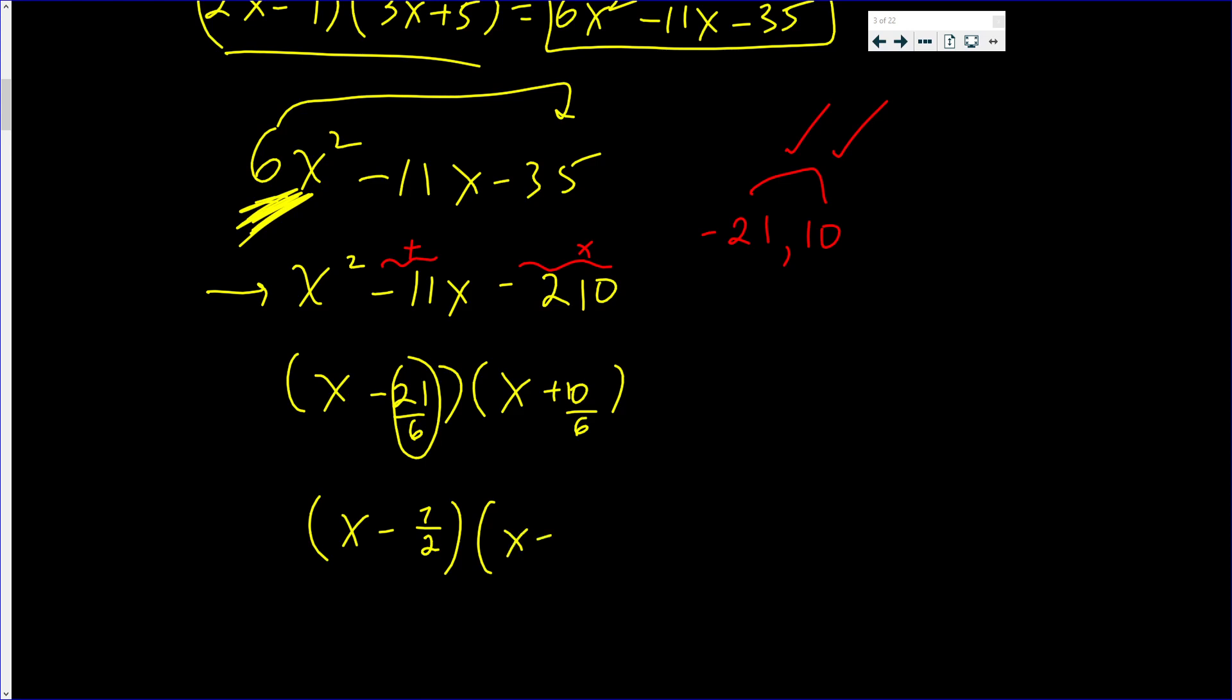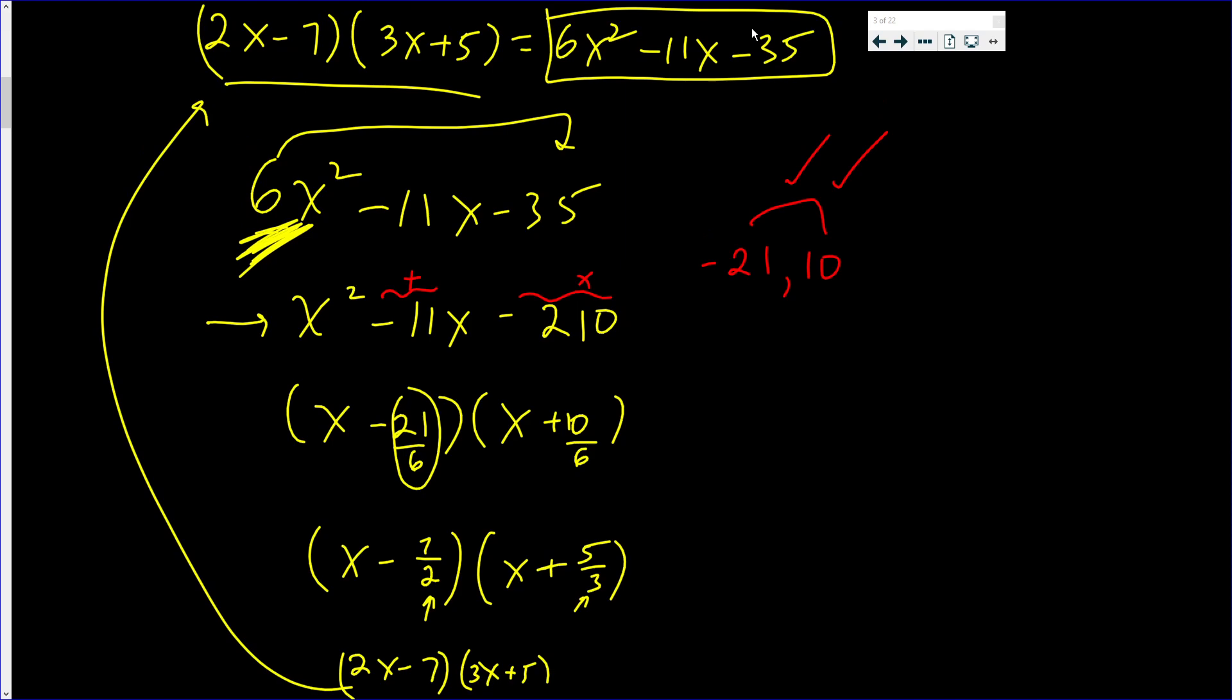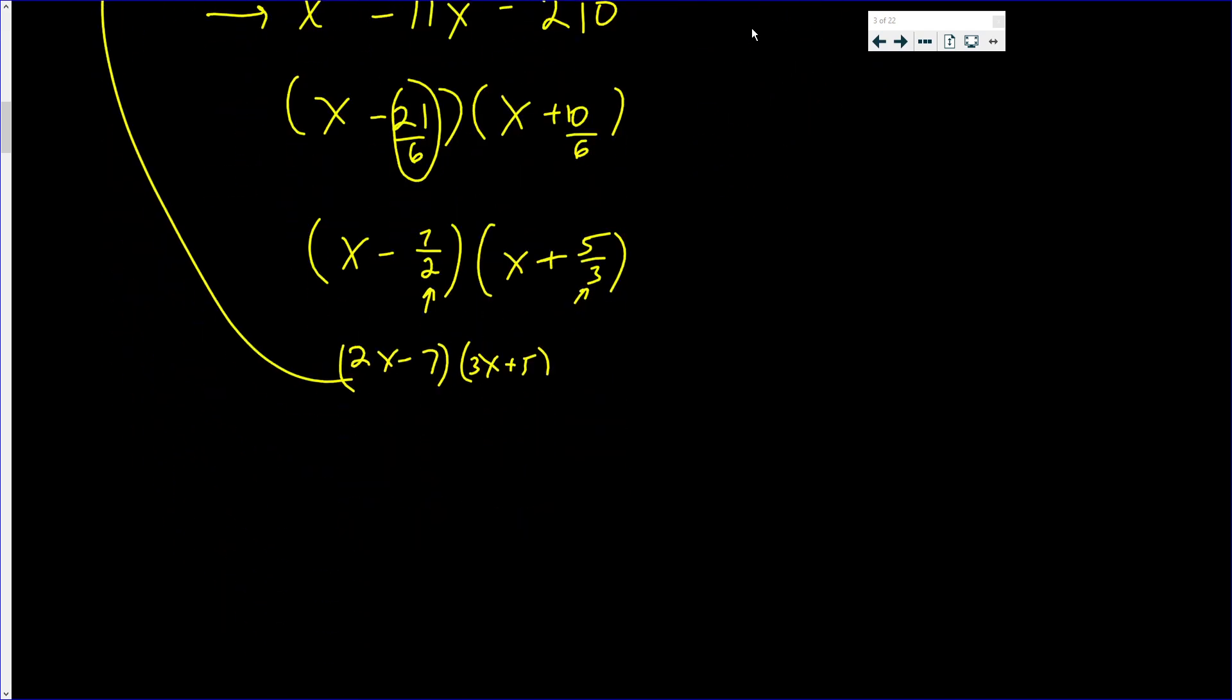And then x plus 5 thirds. Now, multiply the first parenthesis by 2 and what's in the second by 3. I get 2x - 7 times 3x + 5. But that's exactly what I have there. Okay. Now, let's prove why it works.